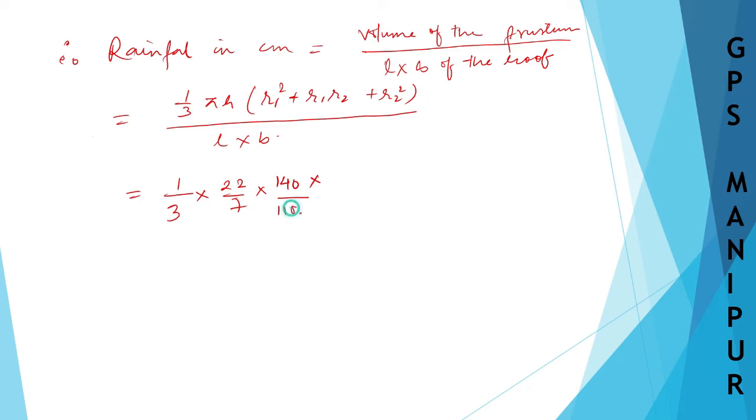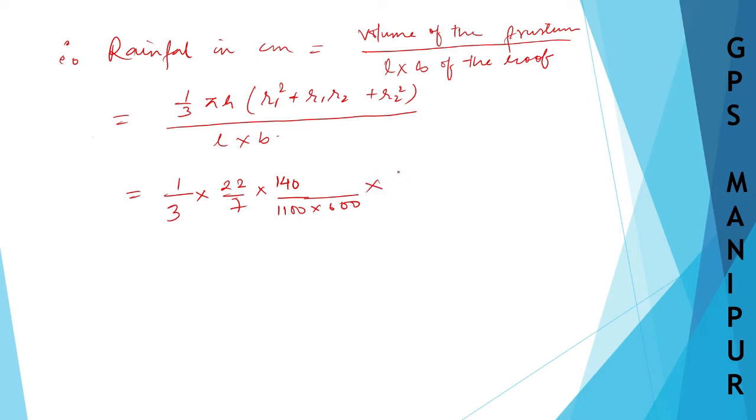So 1100 × 600, this is length. I am just writing down here, I can write down wherever it's suitable. R1², R1 square, I am writing down, R1 that is 90 centimeters, so 90².